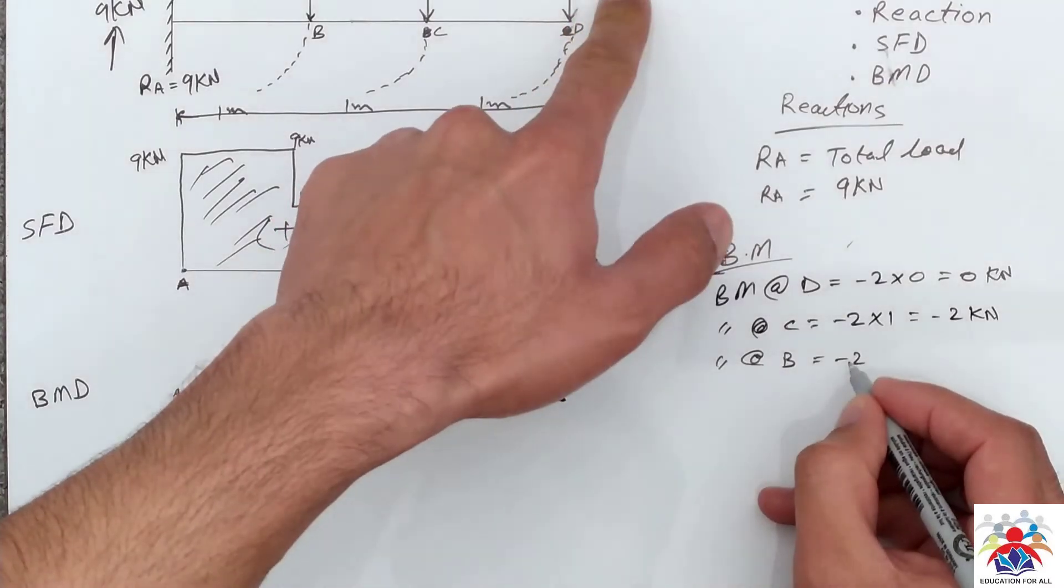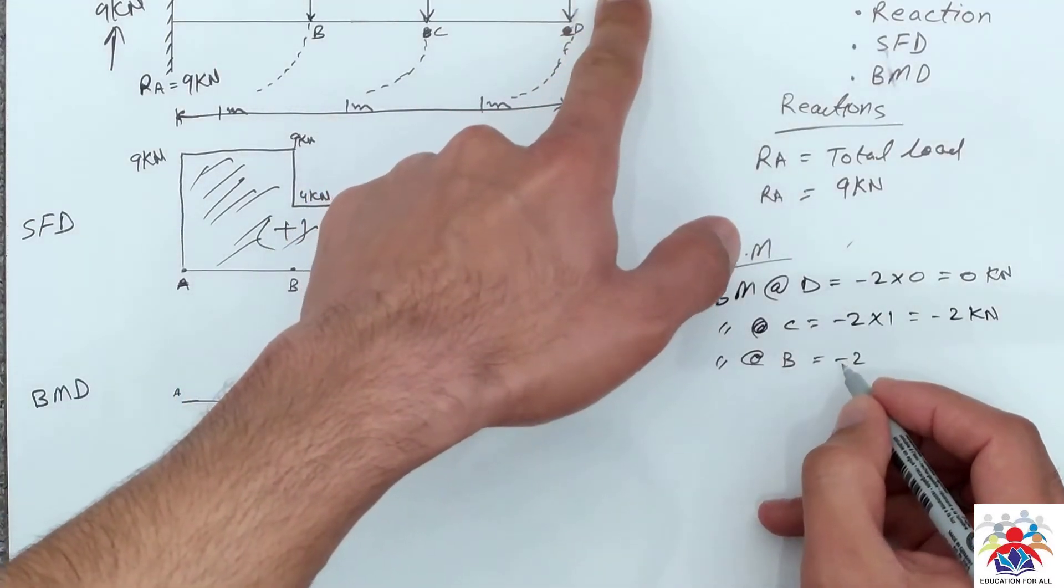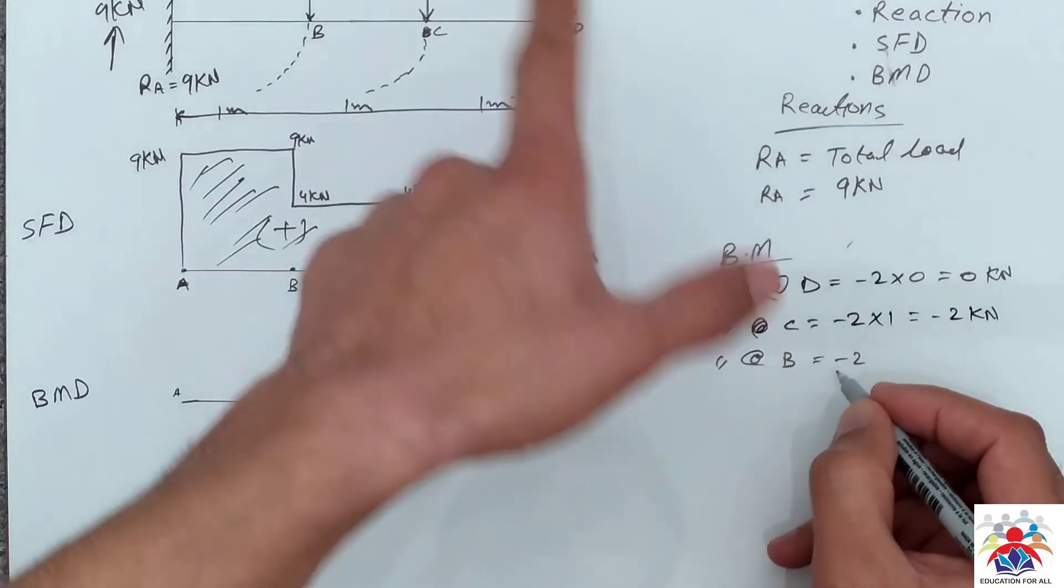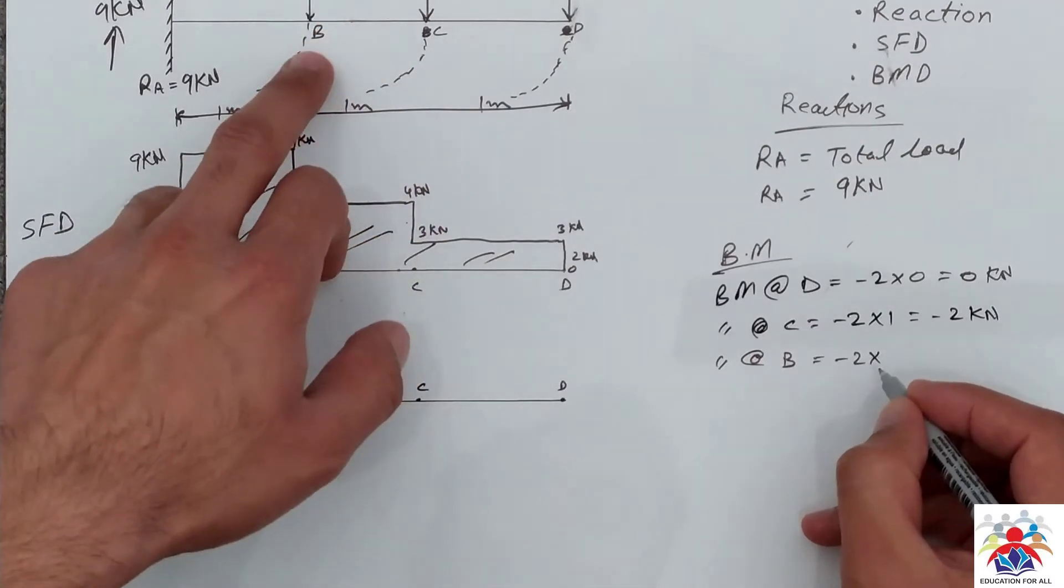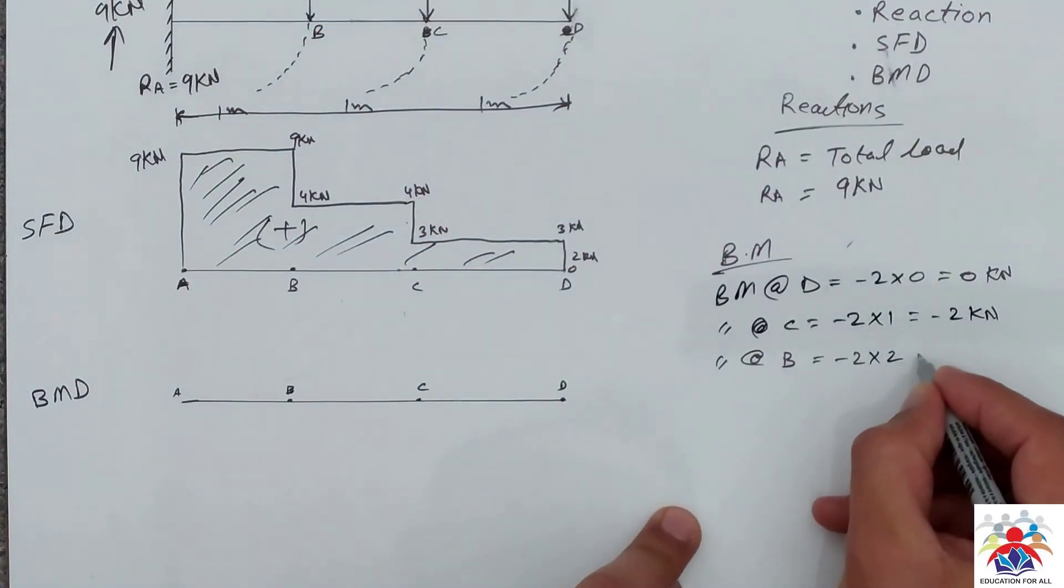Minus 2 because from here we have to start taking loads from the far end. We have to cover all the loads and all the distance, multiply by 2 to get to point B is 2.